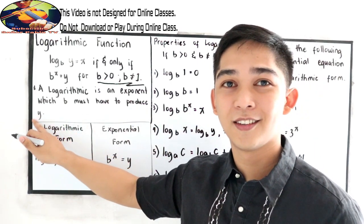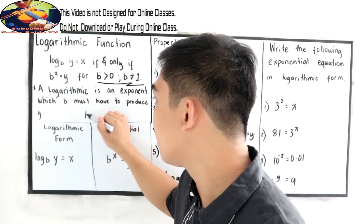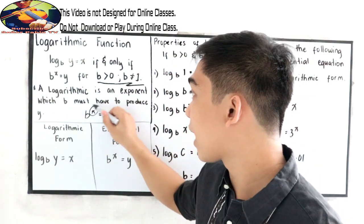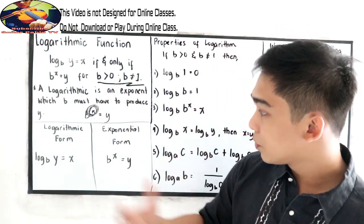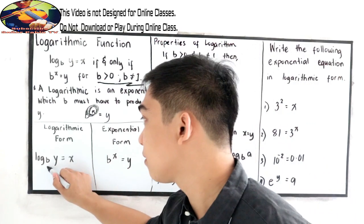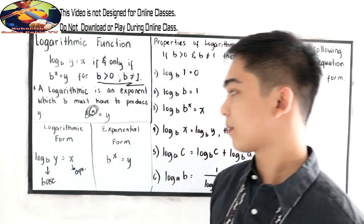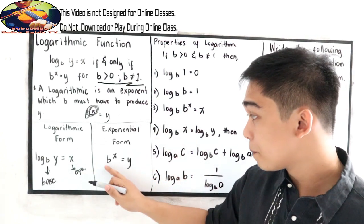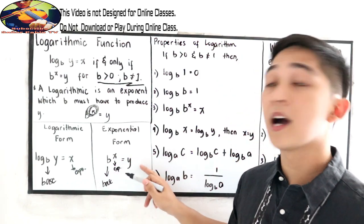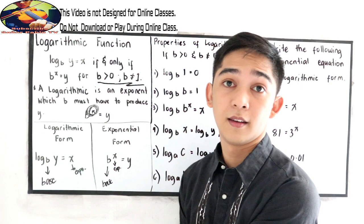A logarithm is an exponent which B must have to produce y. In short, B is the base raised to x, and that will produce y. So in logarithmic form — log y base B is equal to x — B is our base and x is our exponent. Written in exponential form, B raised to x equals y, where B is the base and x is the exponent. Let's have more exercises to better understand this.